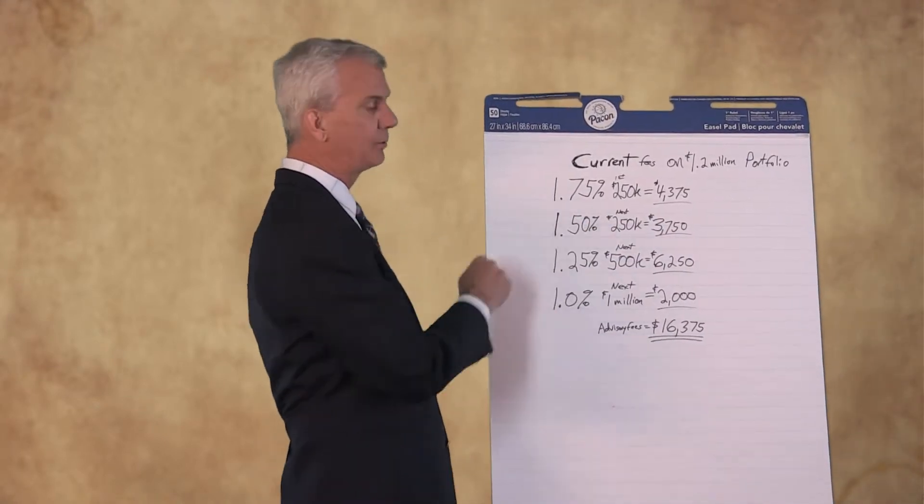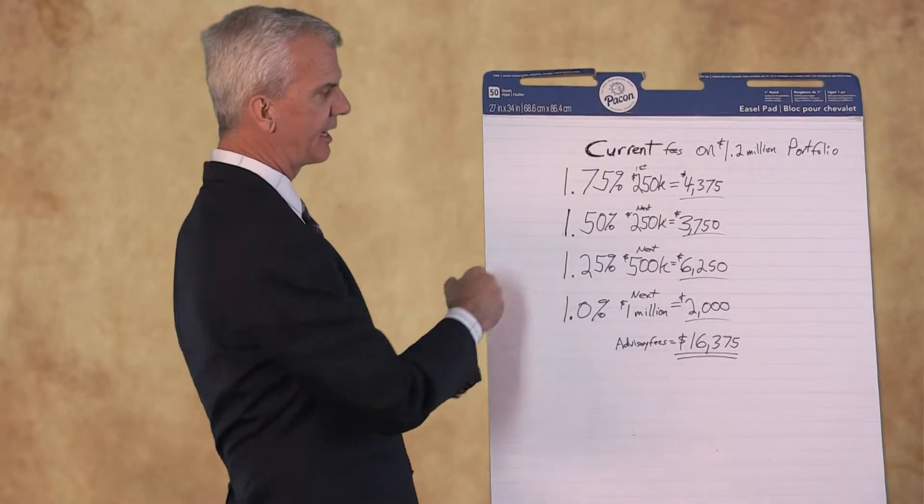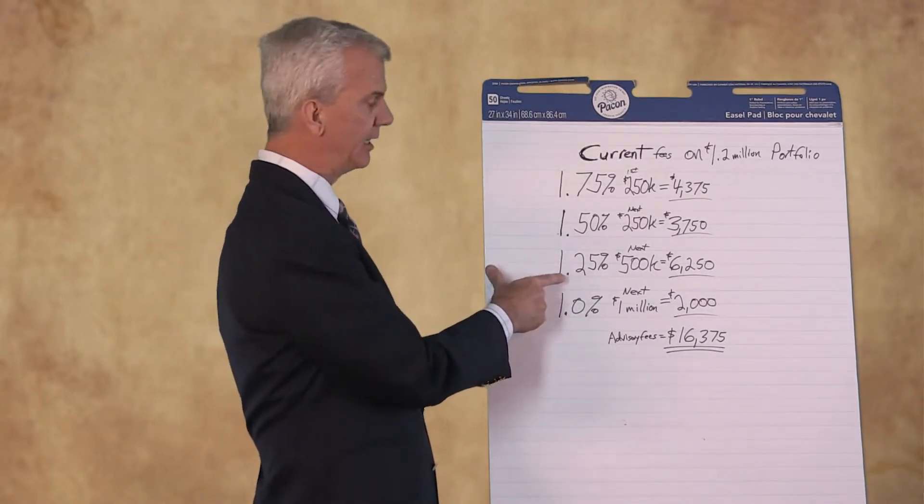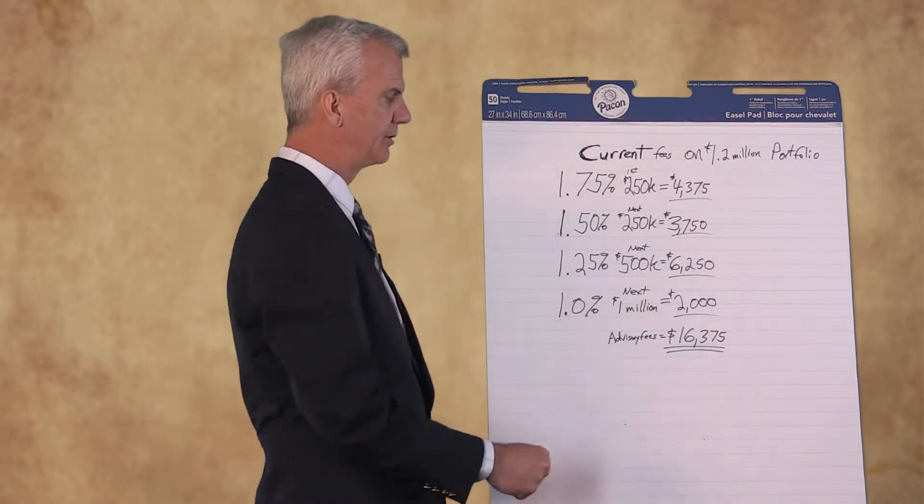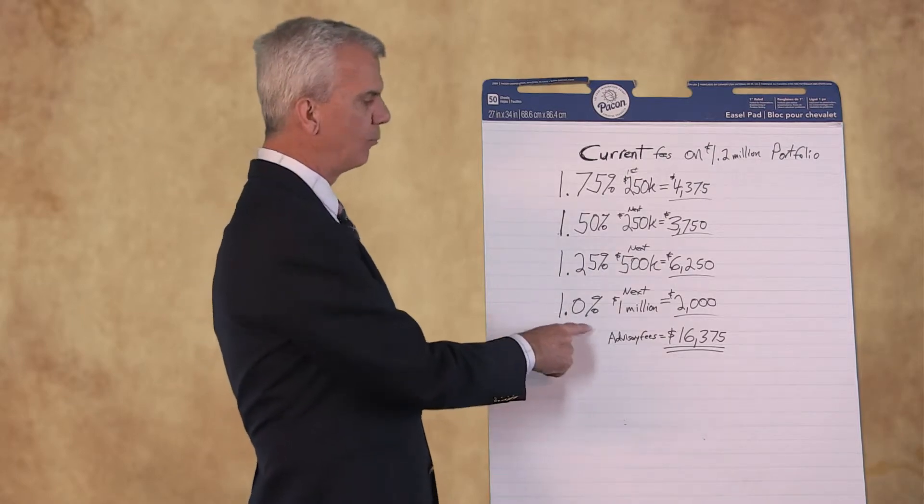The next $250,000 was 1.5 percent, another $3,750. The next $500,000, bringing it up to one million, was at 1.25 percent. The last $200,000 was at 1 percent.